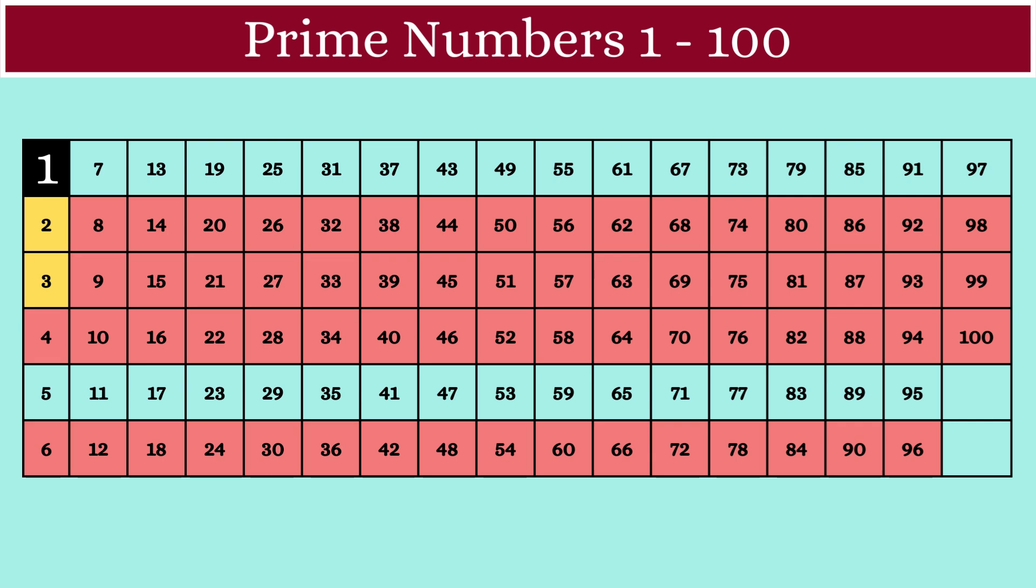Next, we'll move on to 5. Again, 5 is a prime number with factors 1 and 5 only. So, we'll mark 5 as prime and its multiples as composite numbers.